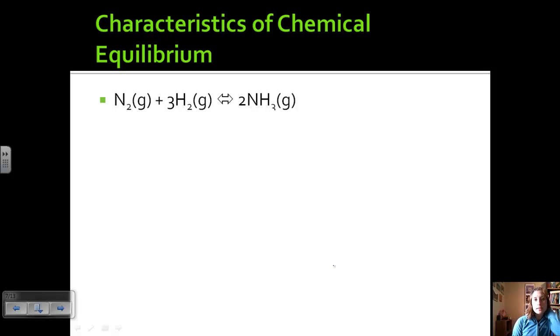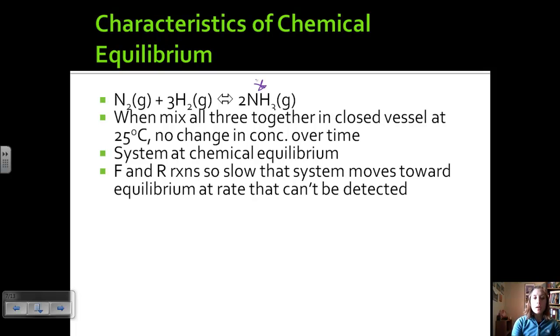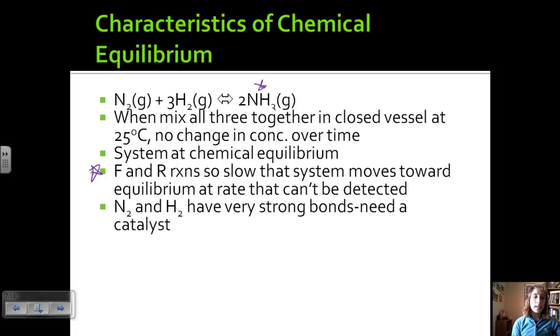Let's take a look at this reaction, which is the synthesis of ammonia, because we've got ammonia as our product here. So when we take our nitrogen, our hydrogen, our ammonia, and mix them all together in a closed vessel, in a closed system, there's no change in concentration over time. Basically, it looks like it's just sitting there. There's two reasons that this could be happening. One is that the system is already at equilibrium, so things are going back and forth, but there's no change. And the second reason is that the forward and reverse reactions are so slow that the system is moving toward equilibrium at a rate that we can't detect. And with this synthesis of ammonia, it's actually the second reason. The reason for that is because N2 and H2, nitrogen and hydrogen, have very strong bonds. In order to break those bonds to produce products, we need a catalyst to speed up that reaction.